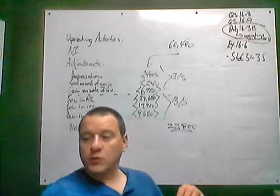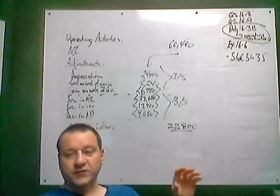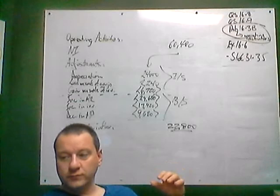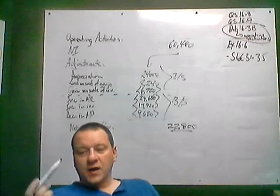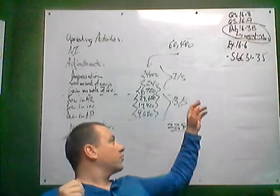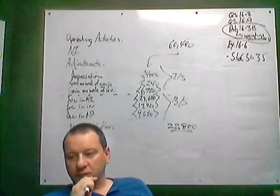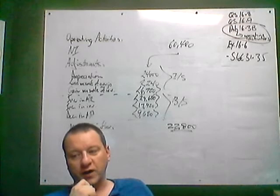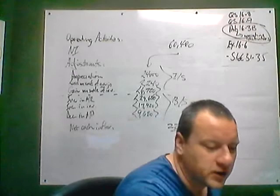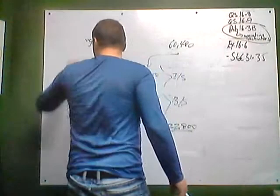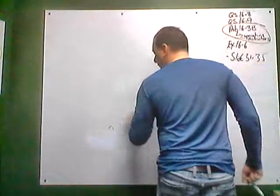So we want to identify changes in investing-related accounts, explain the differences, reconstruct the differences, and then report the effect on cash flow. Let's look at a scenario — a company had, on the income statement, a loss on disposal of $6,000. But we add that back because that's not a cash transaction.